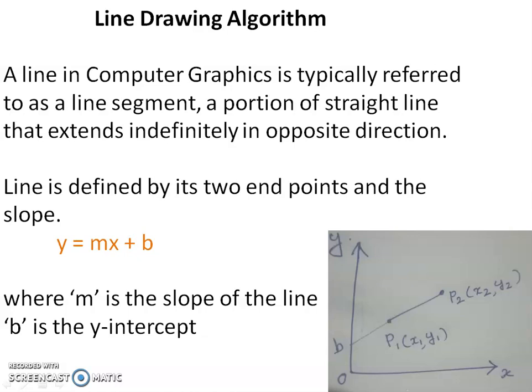The line equation is represented by y = mx + b, where m is the slope of the line and b is the y-intercept. In this figure, b is the y-intercept and P1 and P2 are two points joined by linking. P1, P2 represents the line in the xy plane.